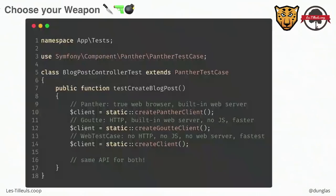When you extend PantherTestCase, you can choose: if you want Panther, it will execute a real web browser with all features but it will be slow. Or if you want Gout, you still have HTTP support — convenient for testing single sign-on services or SAML servers where you don't need JavaScript. Or you can use the plain old WebTestCase — in a Symfony context, PantherTestCase extends WebTestCase — which gives you no HTTP support, no JavaScript support, and no integrated web server, but it's the fastest solution.